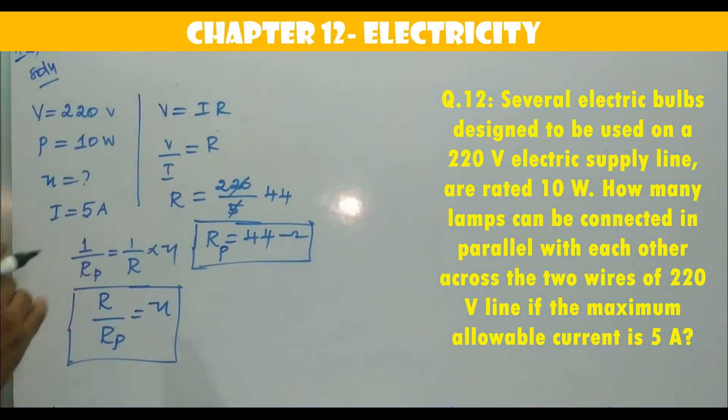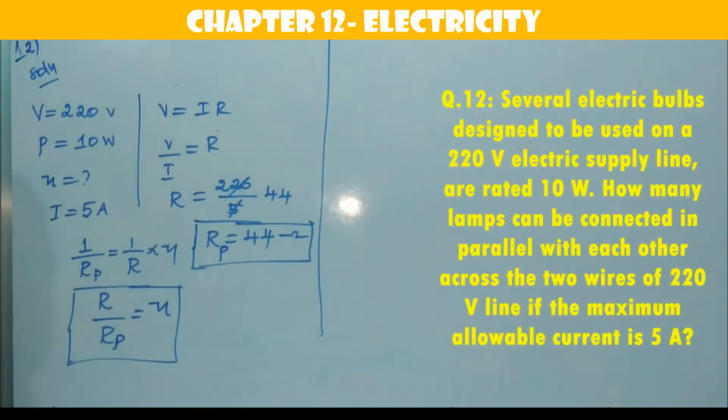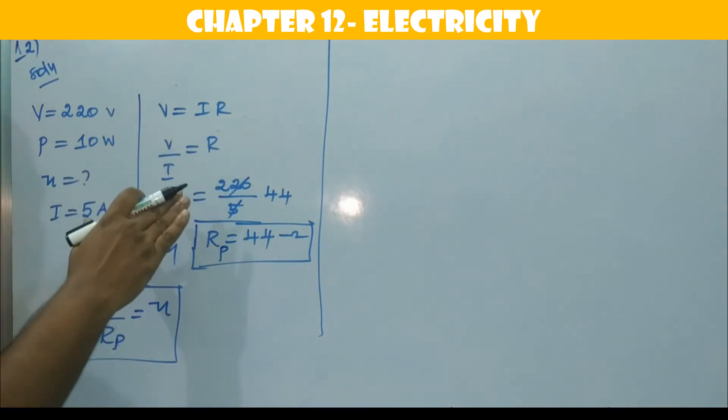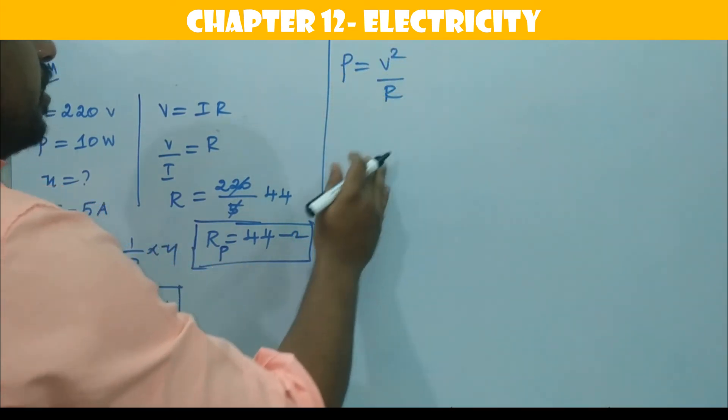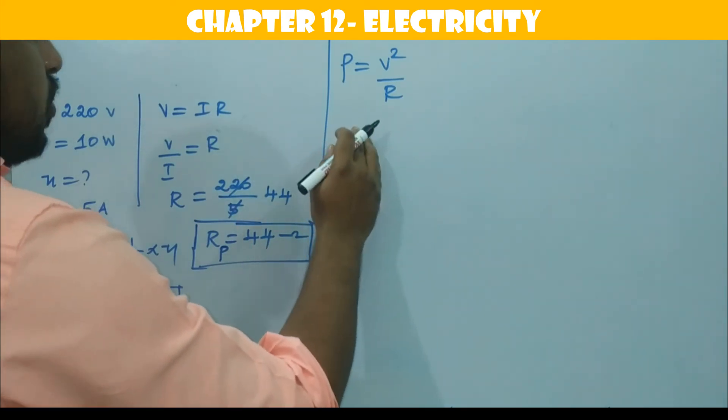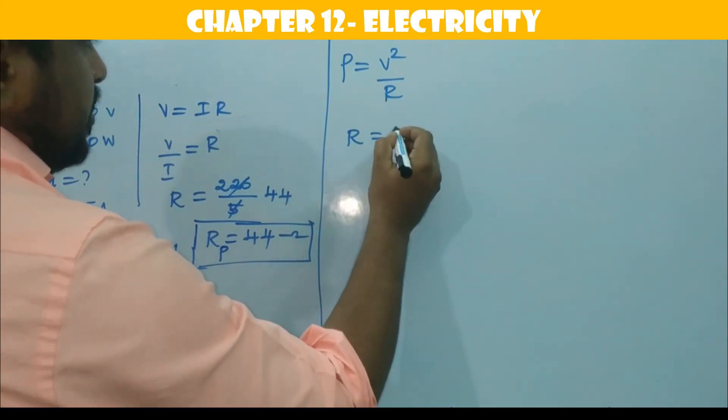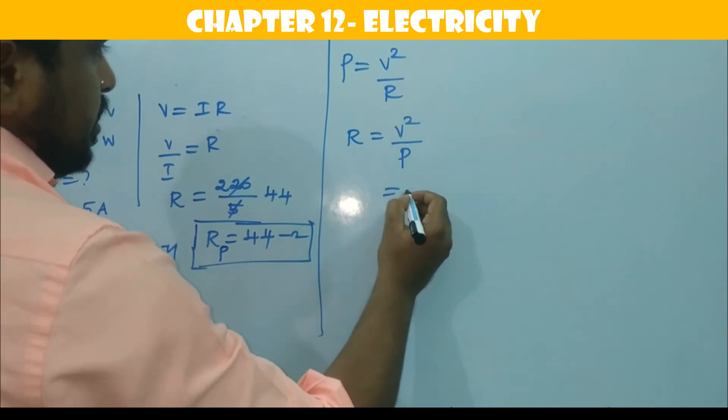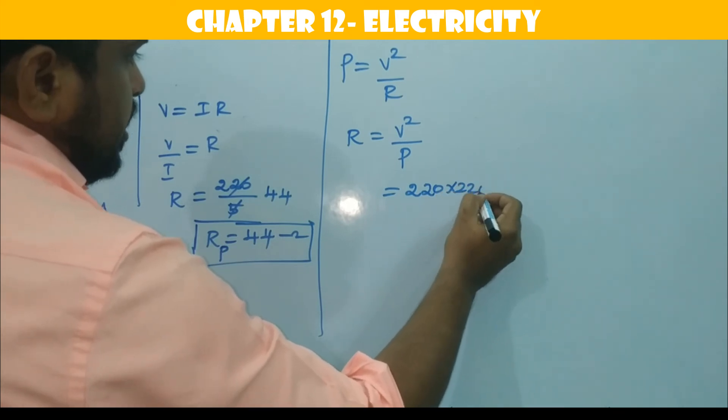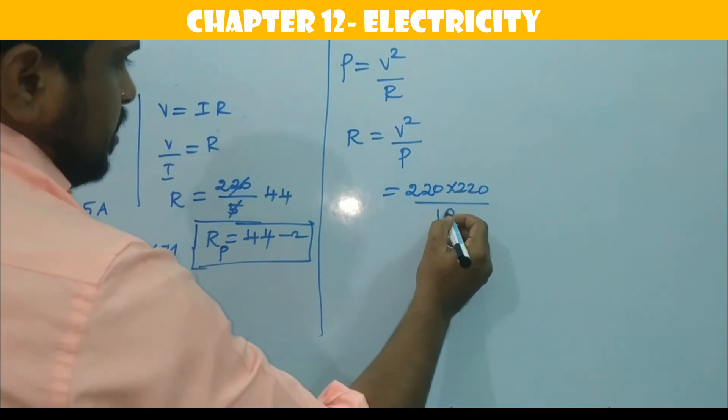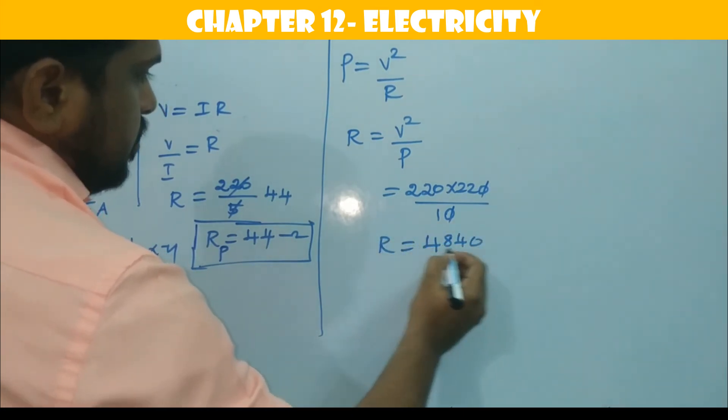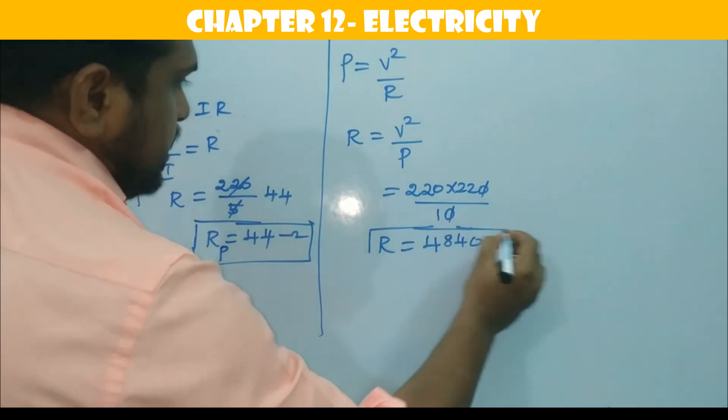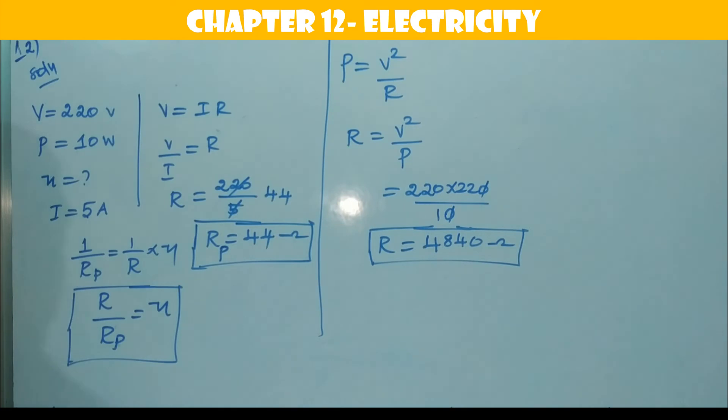Now we have to find resistance of each bulb. So, if the resistance are connected in parallel, what is power formula? Power formula P is equal to V squared by R. That is power formula. Now, we need this R value. Then R is equal to V squared by P. What is V here? 220 squared. So, 220 into 220. Power is 10. Then 4840 Ohm. That is the resistance of each bulb.